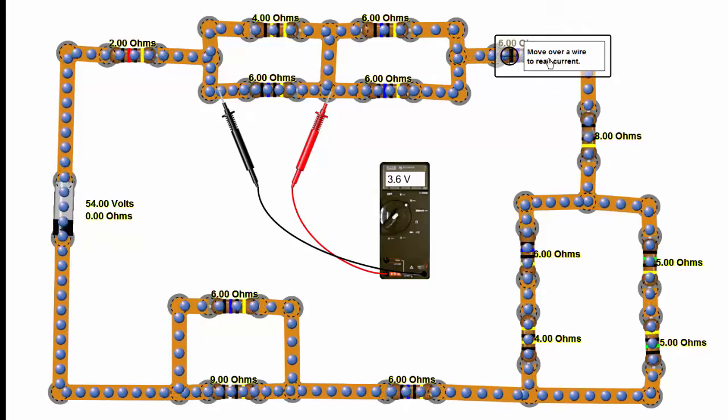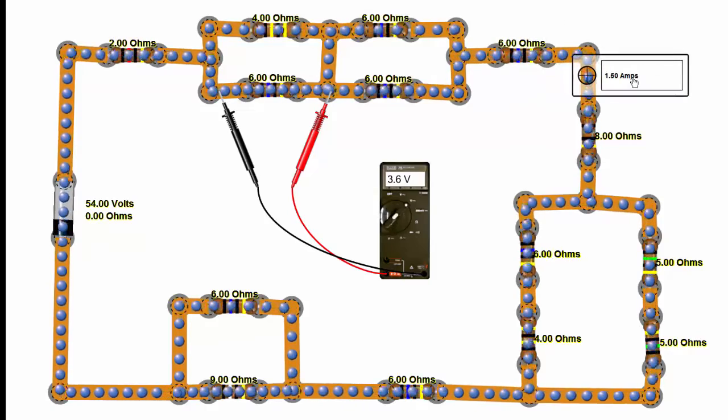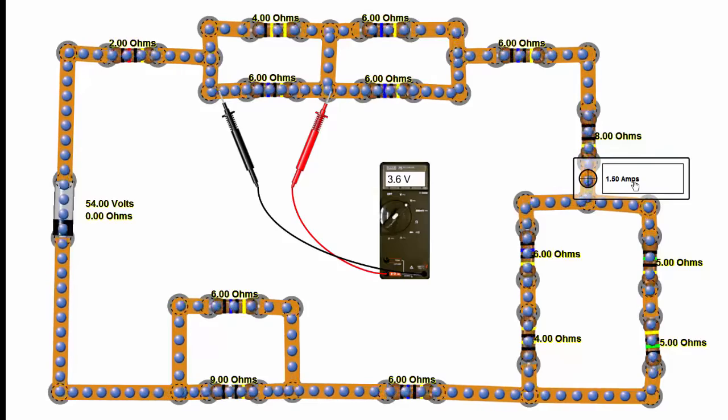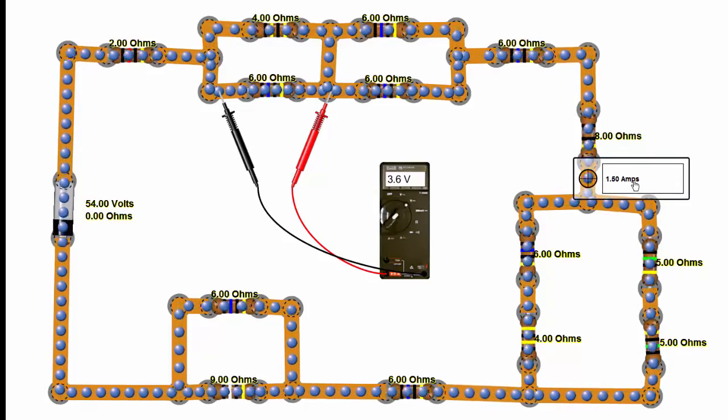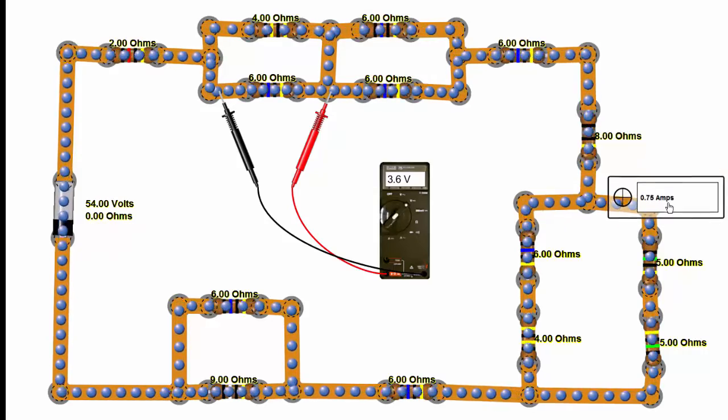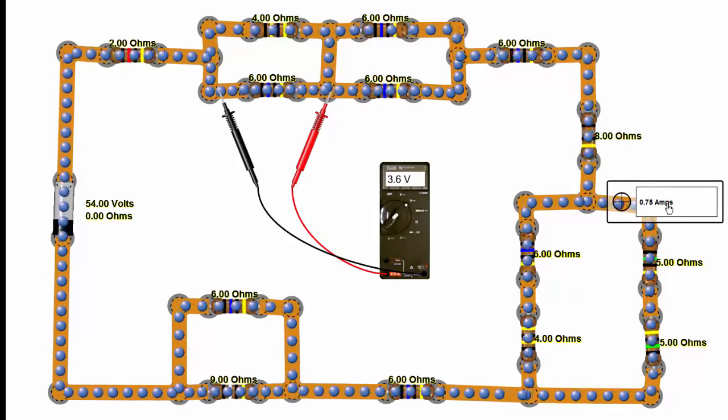So anywhere we measure next to a series resistor, a single series resistor, we're going to measure the total current. And then we have it break up here into 0.75 and 0.75, and this is Kirchhoff's current law. The currents have to add to the total current.